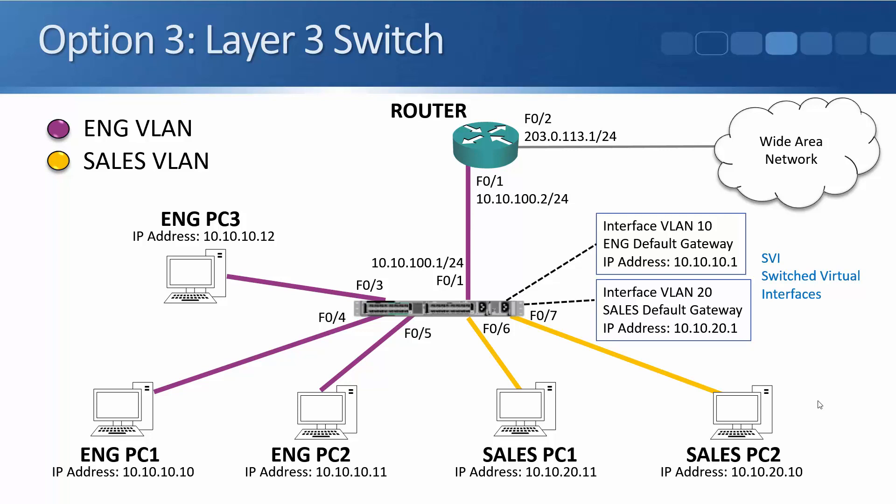In the topology diagram, there's also an external router even though the switch can do routing itself. The reason is that the external router is connected out to the wide area network. It's quite often the case that your connection to a service provider won't use an Ethernet port, and layer 3 switches only support Ethernet. So if you need a different type of interface or WAN features not supported on the switch, you'll need a separate dedicated router for WAN connectivity.